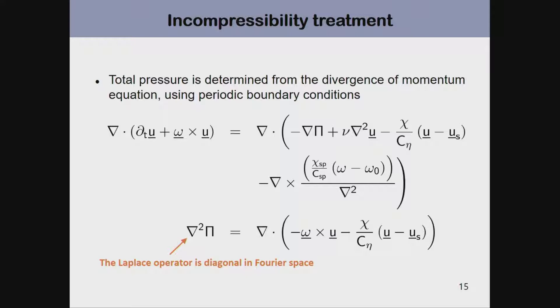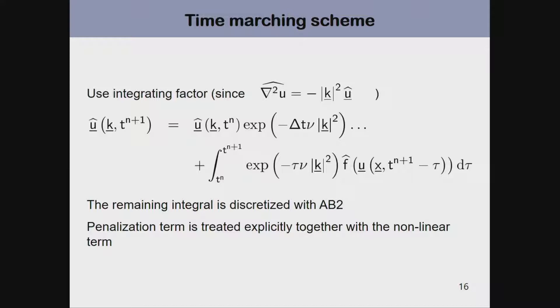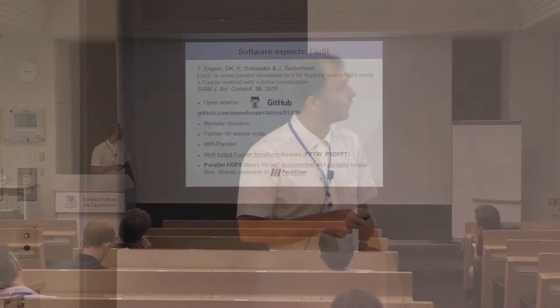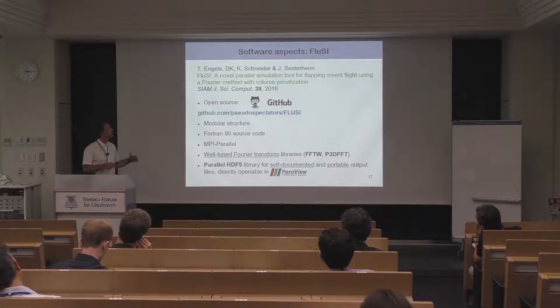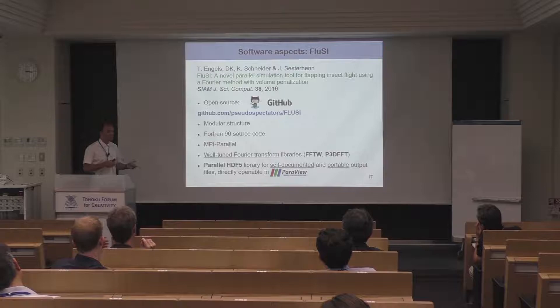It is important to note that not only the nonlinear term but also the penalty term is in general not divergence-free, so both must be included when computing the pressure. The time marching scheme is Adams–Bashforth; since the viscous term is linear in Fourier space, it is treated using an integrating factor, and the integral is discretized using the Adams–Bashforth scheme.